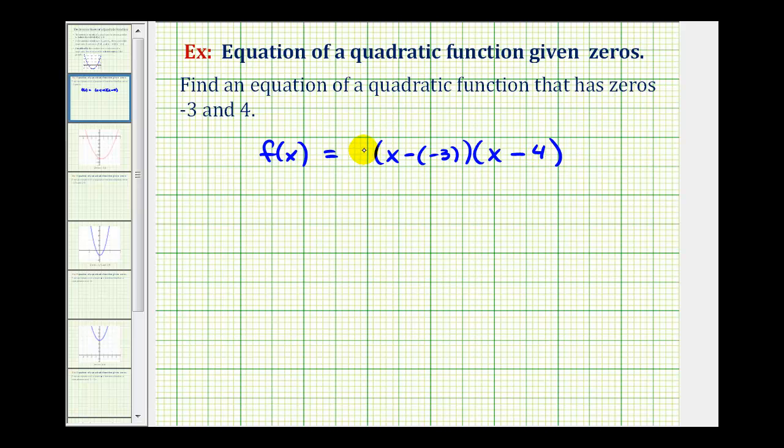Now we could also place any constant here, but normally we just let a equal one, so we can leave it off. Let's go ahead and simplify this first factor. We would have f(x) equals the quantity x plus three. Remember, subtracting a negative is the same as adding a positive, times the factor of x minus four.